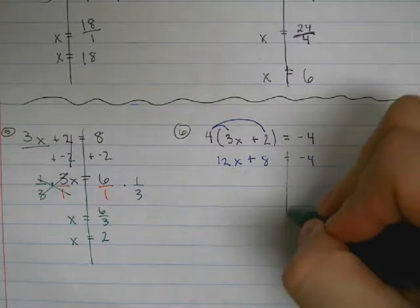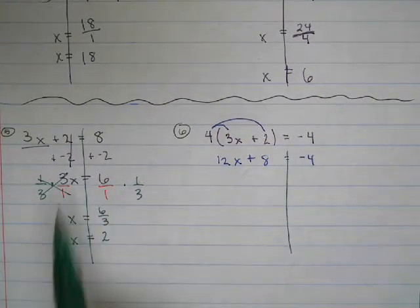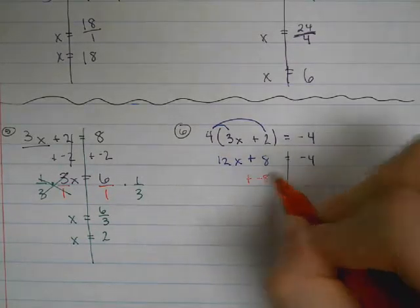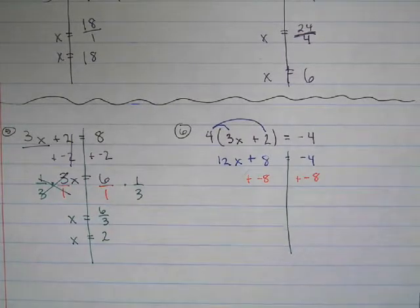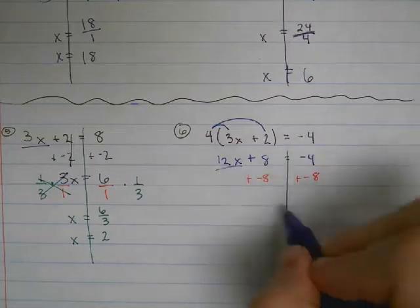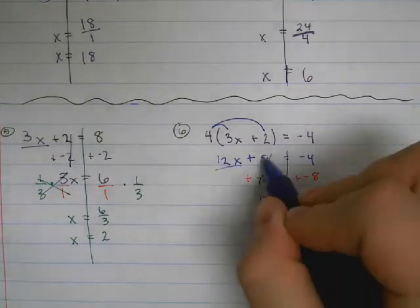Draw our line down the middle. And now we'll just do our 2 steps like we did over here. We'll add the opposite, plus negative 8, plus negative 8. We'll have 12x left behind. 8 and negative 8 cancel.